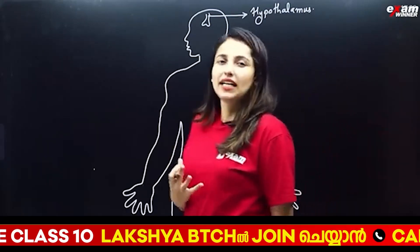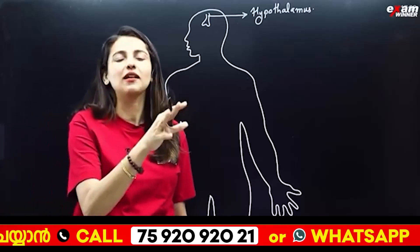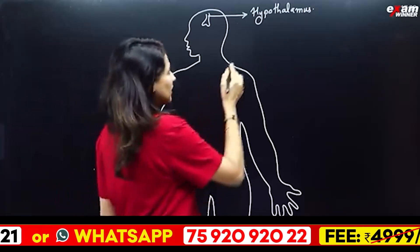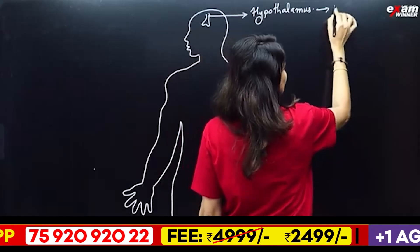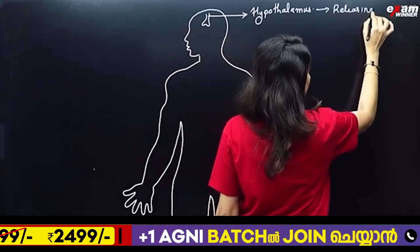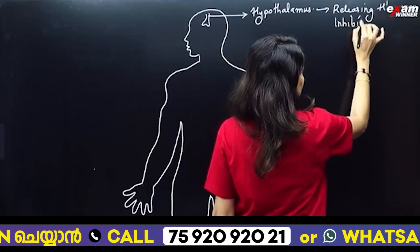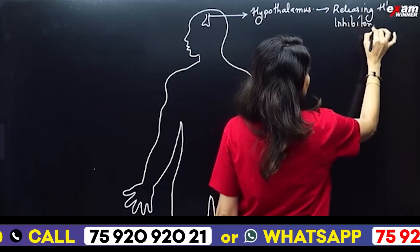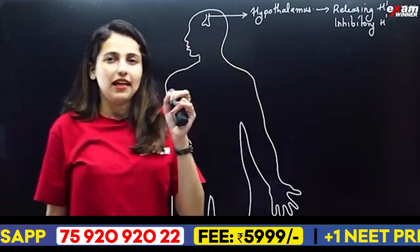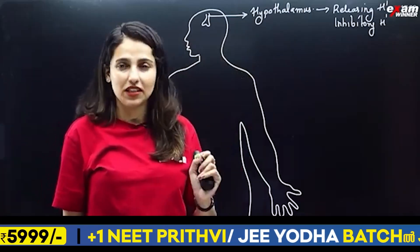What are endocrine glands? We are going to talk about ductless glands, because they are released into your blood. Hypothalamus releases hormones — releasing hormones and inhibitory hormones. This is the main function of the hypothalamus.